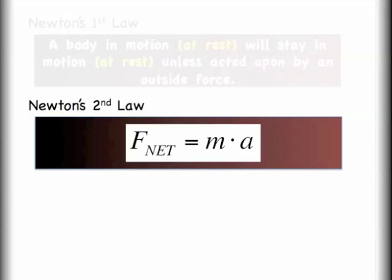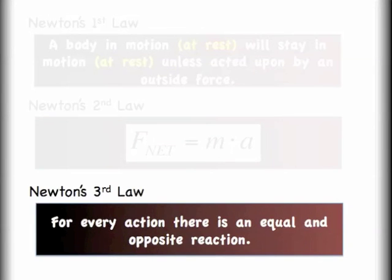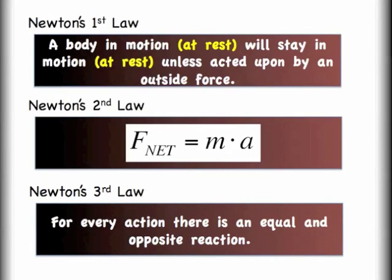Newton's second law can really be described best with this equation where it says F net is equal to M times A, where that is saying the net force is equal to the mass times the acceleration. The third law says for every action there's an equal and opposite reaction. So these are the three laws of motion. Let's go ahead and take a slightly closer look at each of these.